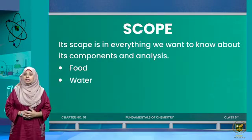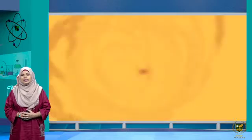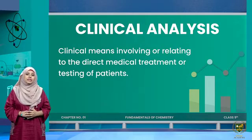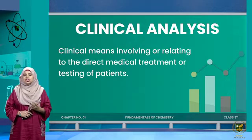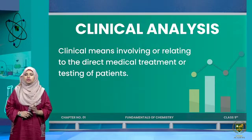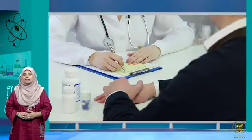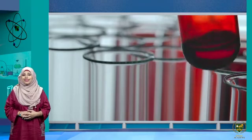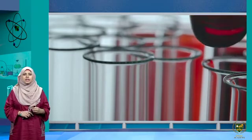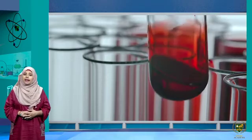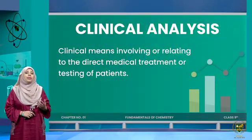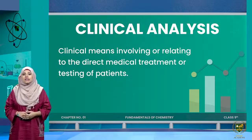Analytical chemistry also includes environmental and clinical analysis. Clinical analysis means anything related to direct medical treatment or testing of patients. For example, if there is a problem and a doctor wants to know the hemoglobin level in blood, a blood sample is taken to the lab for clinical analysis — first identifying what components are present (qualitative) and then determining their amounts (quantitative). This makes analytical chemistry very important for clinical analysis.